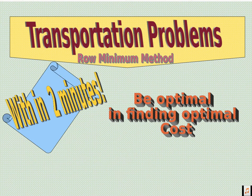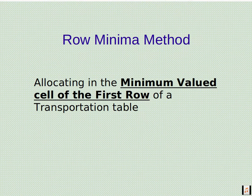Welcome to Quick Learn. Allocating in the minimum valued cell of the first row is called row minima method.